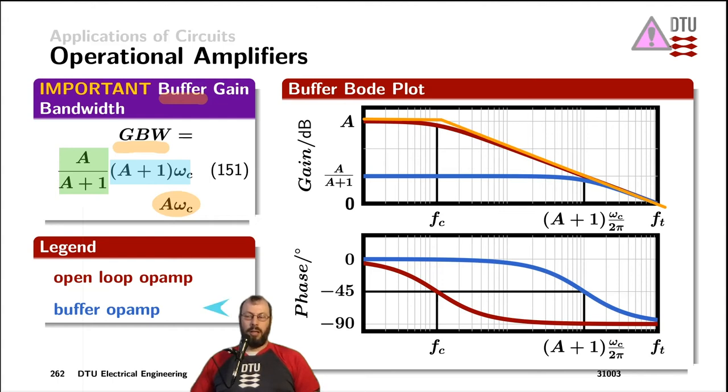With the operational amplifier configured as a buffer, we get a new DC gain which is lower than the open-loop gain, and we get a new corner frequency, A plus 1 multiplied by omega C, and as I'm plotting F here on the x-axis, we need to divide by a factor of 2 pi. The amplitude stays within the boundaries given by the device, but the minus 45 degree phase shift has moved to the new corner frequency.